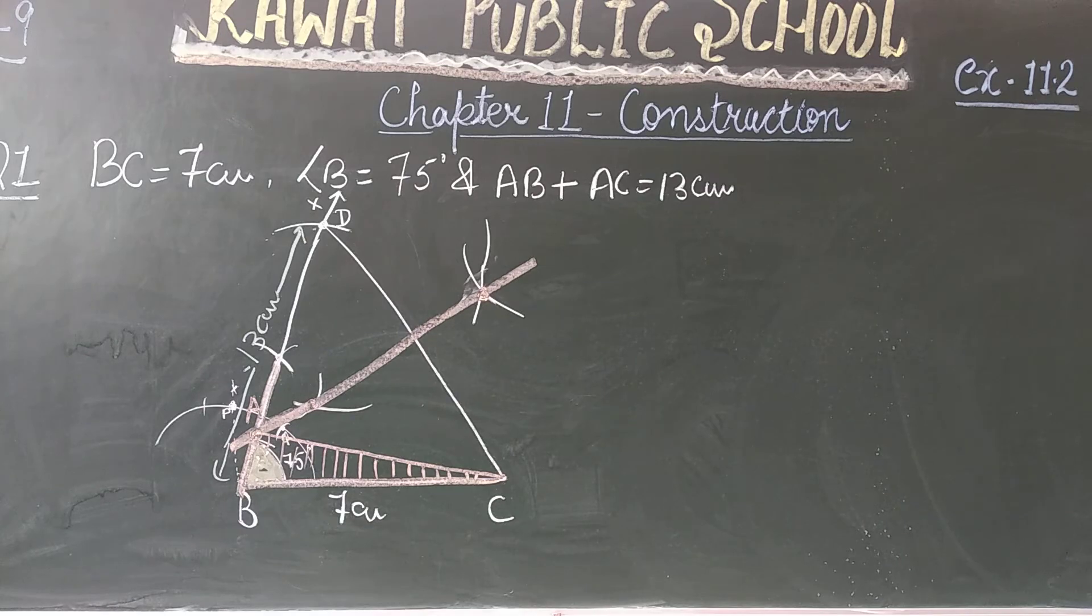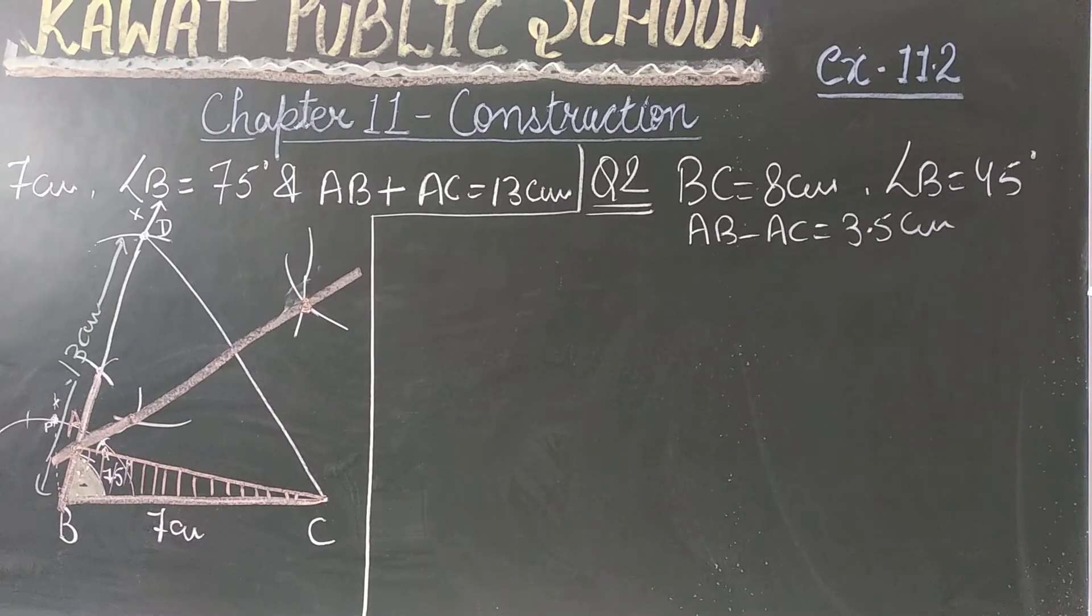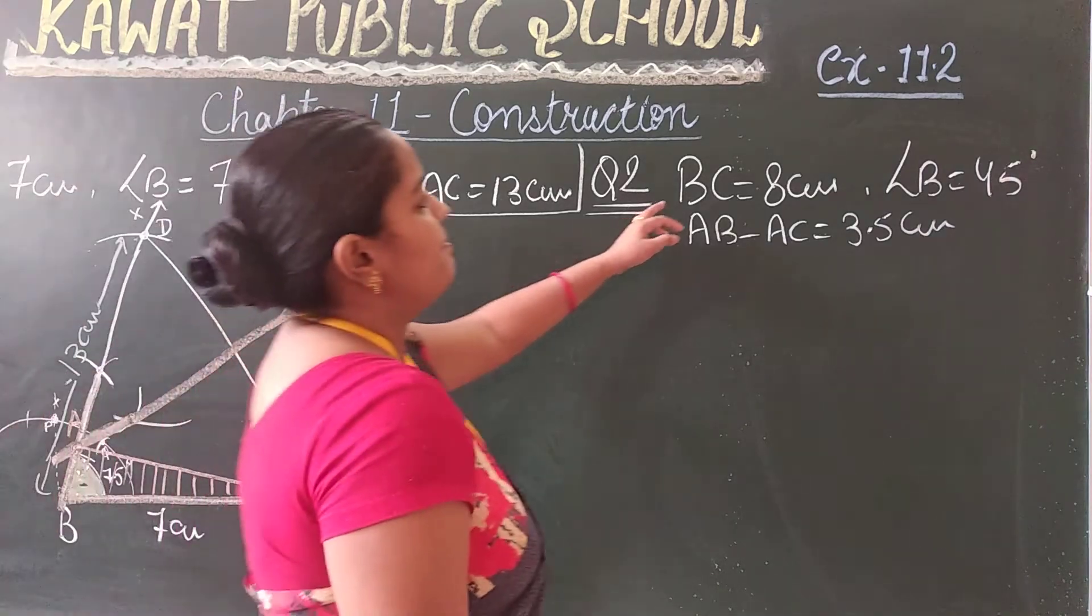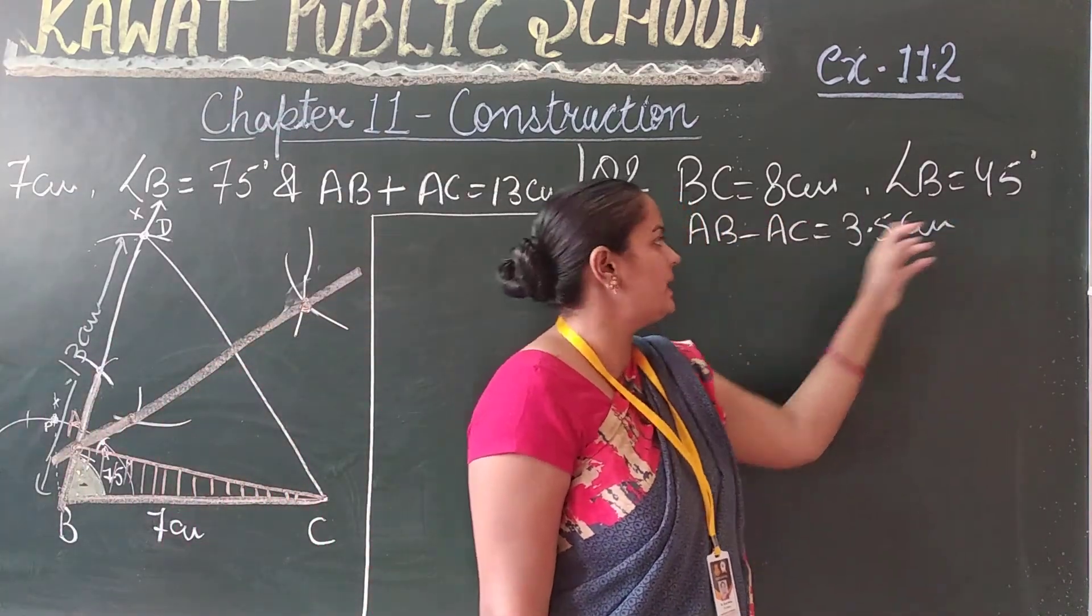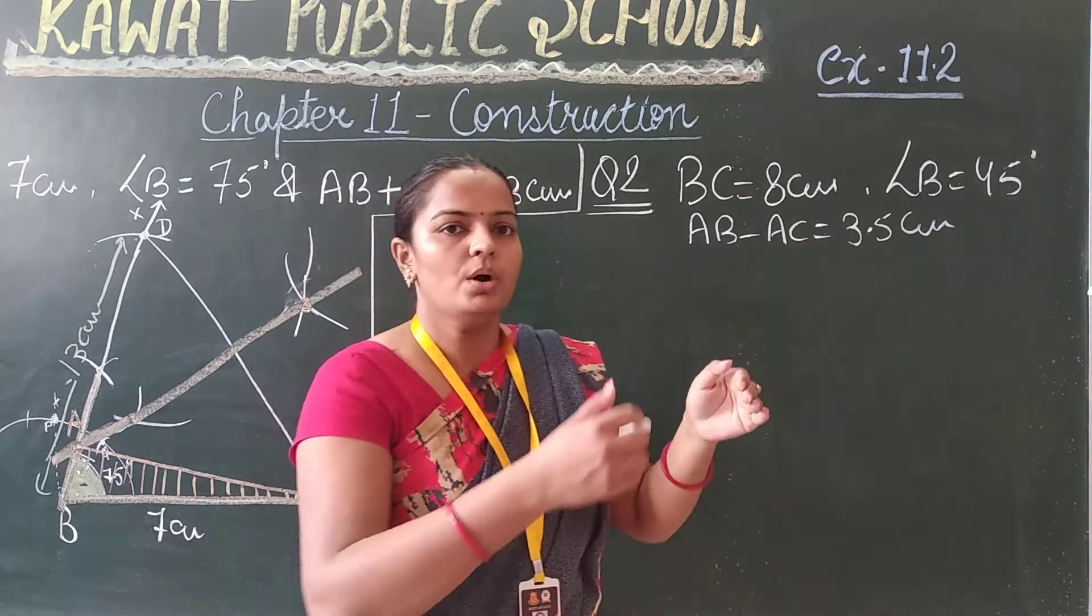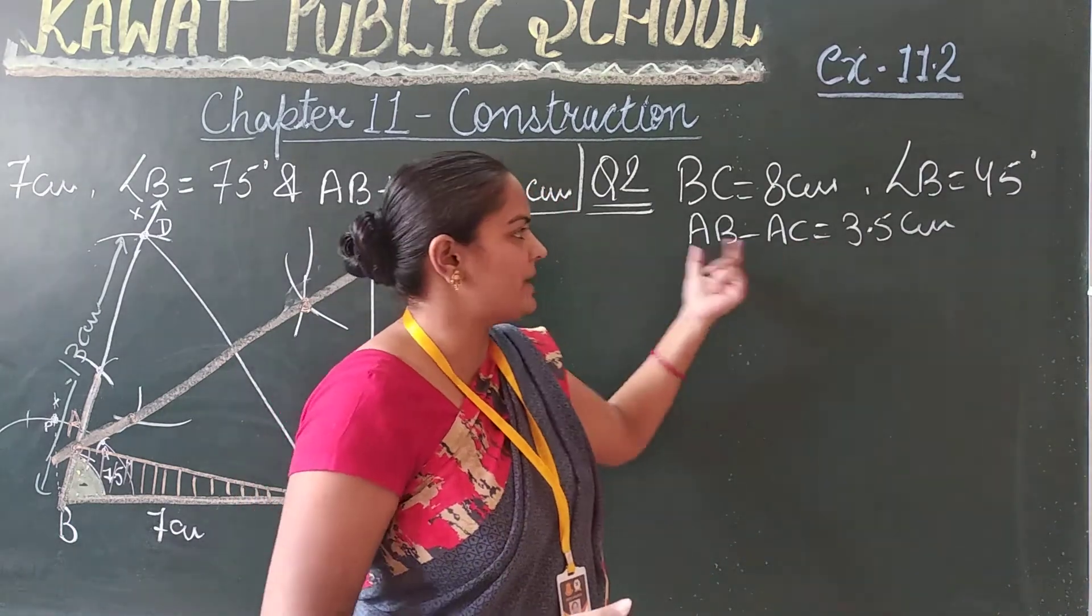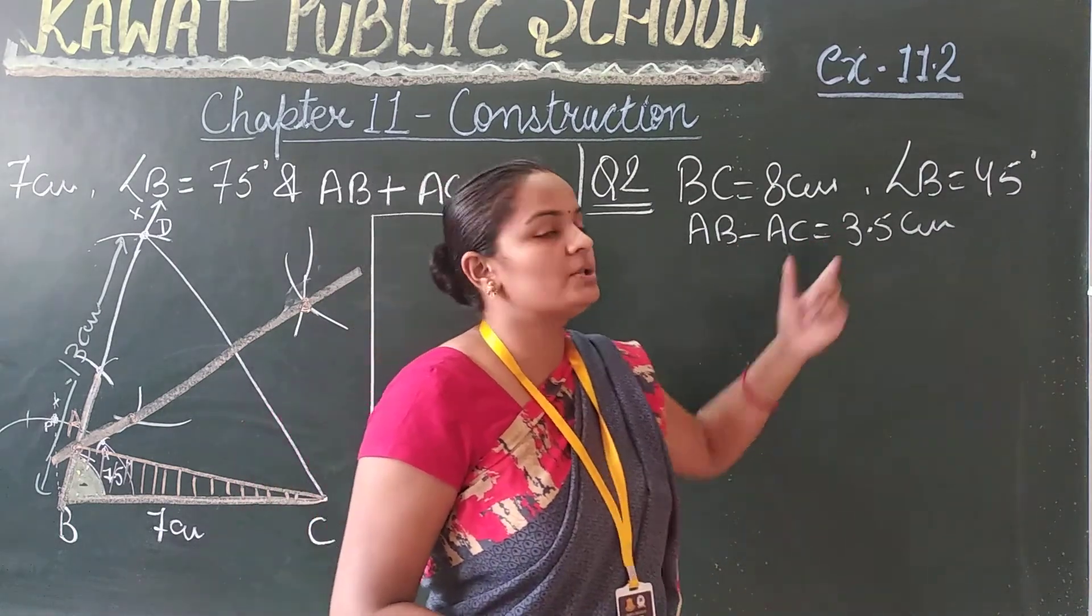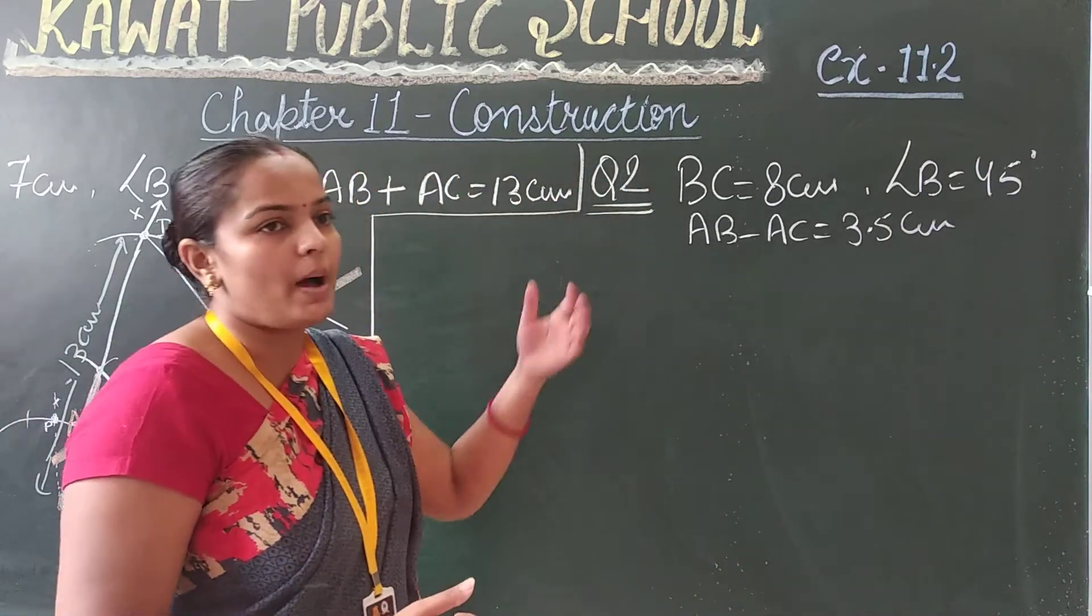Now question number second. BC is 8 centimeters, angle B is 45 degrees, and AB minus AC, the difference of two sides, is 3.5 centimeters.